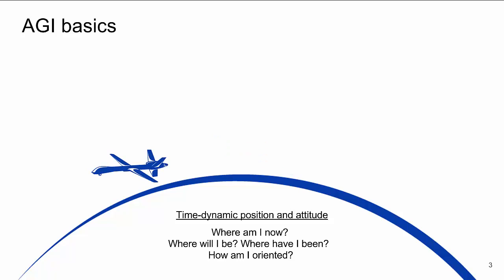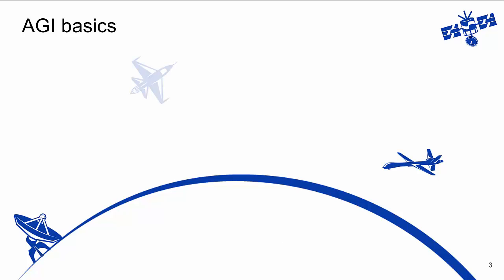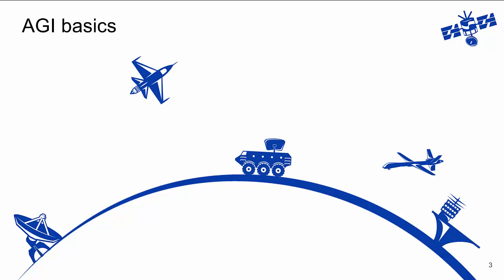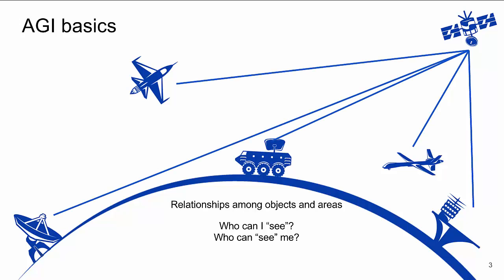SDK Components can model many different types of objects, including sensors, satellites, UAVs, planes, ground vehicles, and ships. We then take the important step of understanding the relationships among these objects. Using a term we call access, we begin to understand who I can see and who can see me, and whether we can see each other at all.